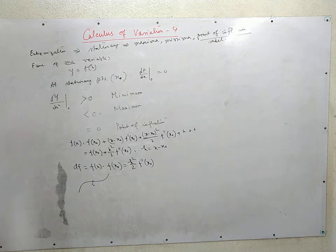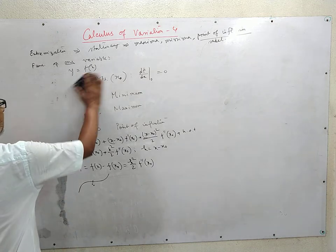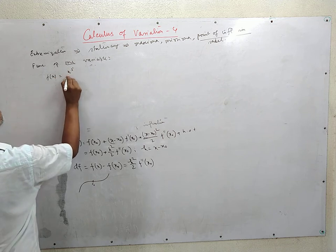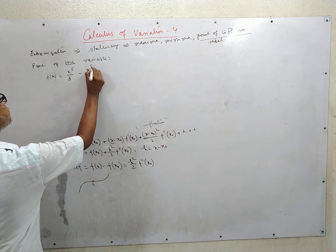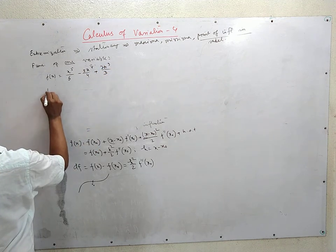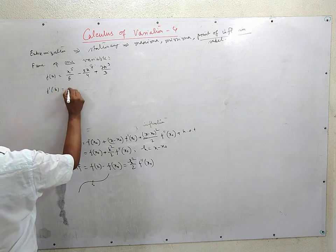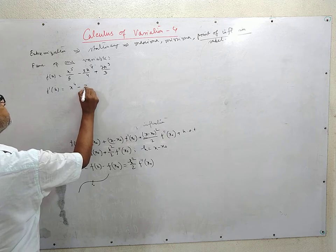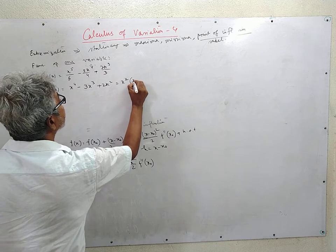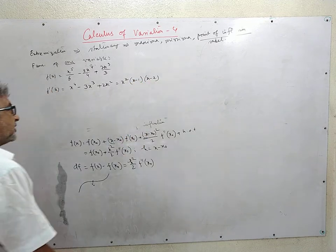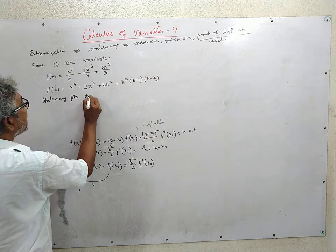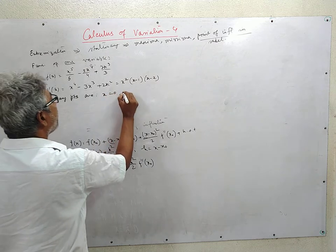Consider the simple example f(x) = x⁵/5 - 3x⁴/4 + 2x³/3. Then f'(x) = x⁴ - 3x³ + 2x², and factoring out x², we get f'(x) = x²(x - 1)(x - 2). So the stationary points are x = 0, 1, and 2.